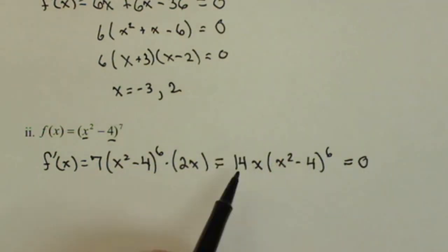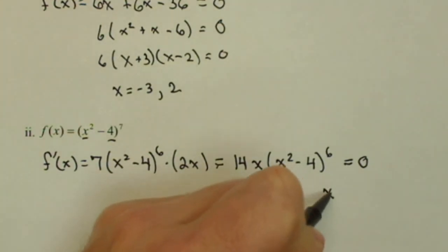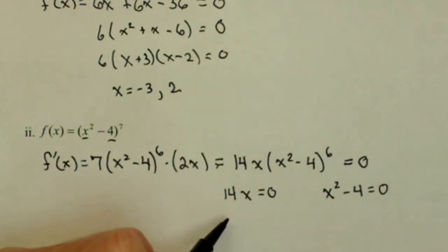We have a product equal to 0. We can set each part of the product equal to 0 and solve. So we have 14x = 0 and x² - 4 = 0. This is going to give us a critical point at x = 0.